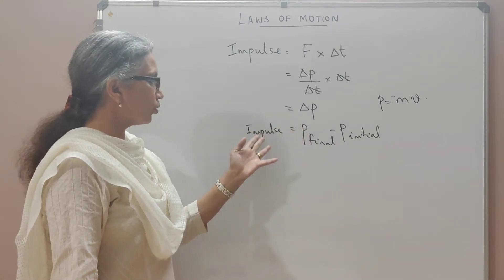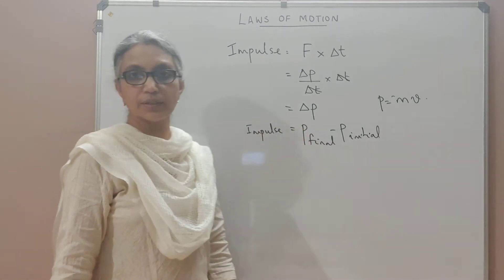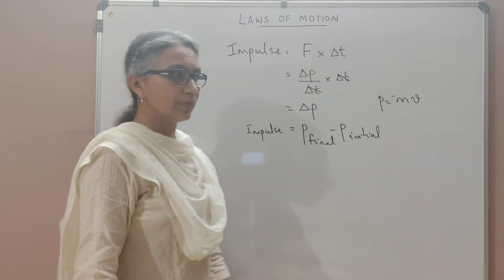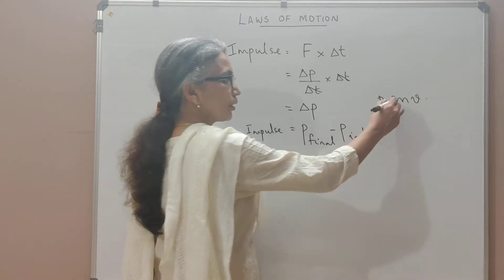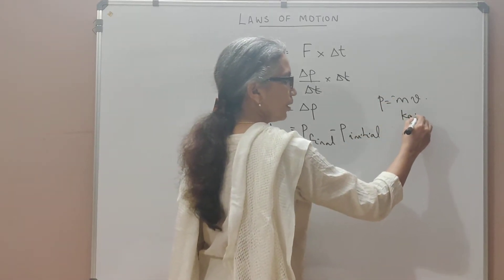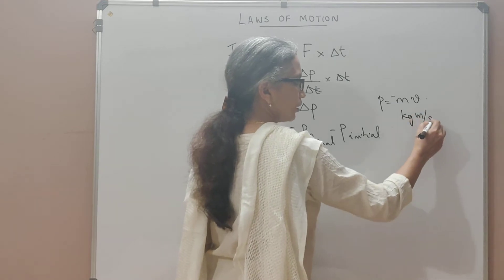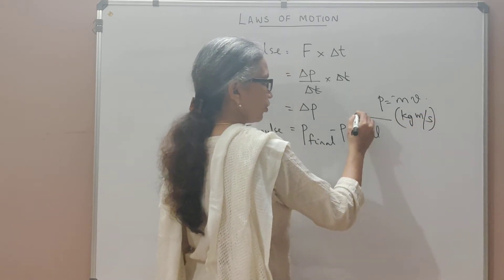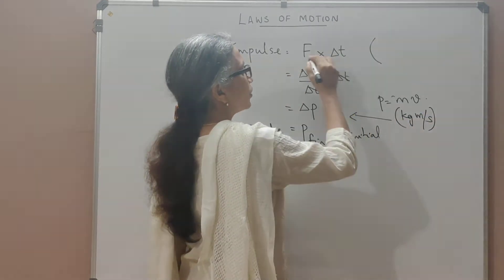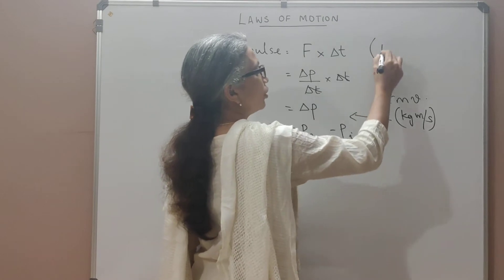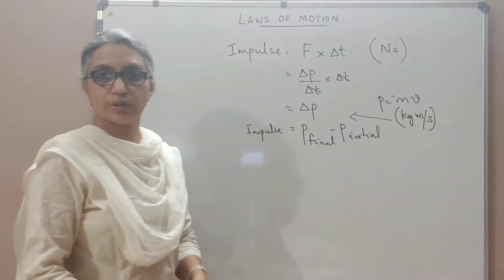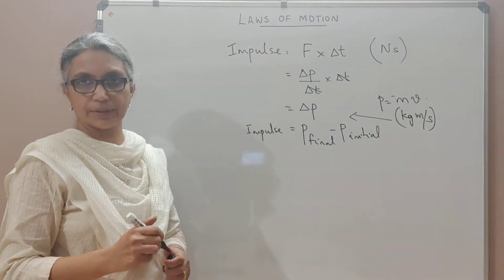Impulse must have the same SI unit as momentum. The SI unit of momentum is kilogram meter per second, which is the same for impulse. Equivalently, Newton-second is also a valid SI unit for impulse.